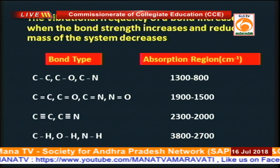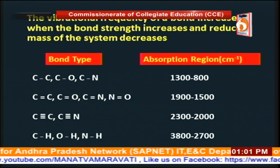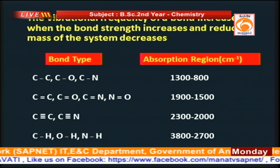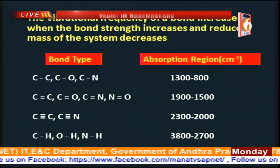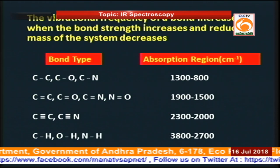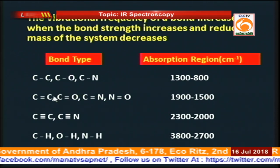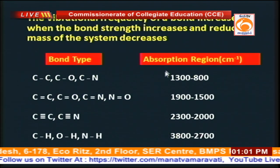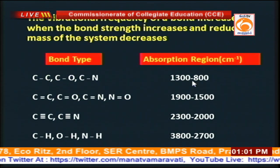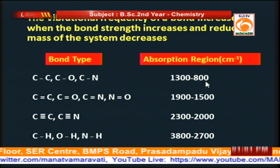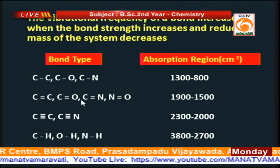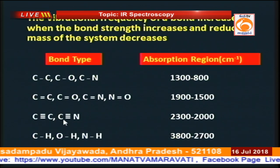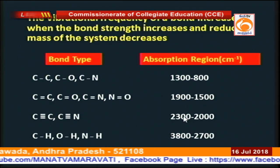The vibration frequency of a bond will change as the bond strength changes or the reduced mass of the system decreases. For C-C single bonds and C-O single bonds, frequencies are in the range of 800–1300 cm⁻¹; for double bond systems the values are higher; and for triple bond systems the values are even higher.